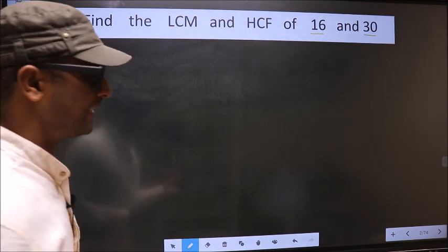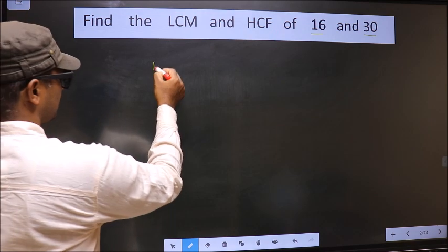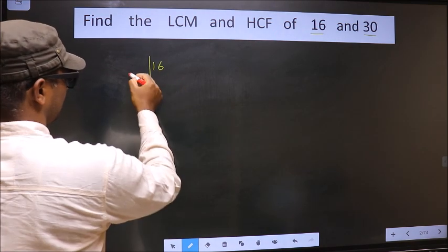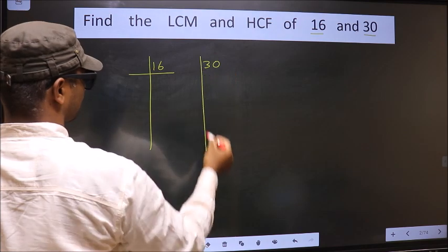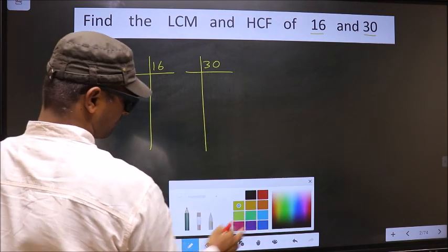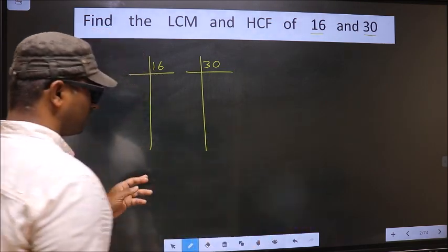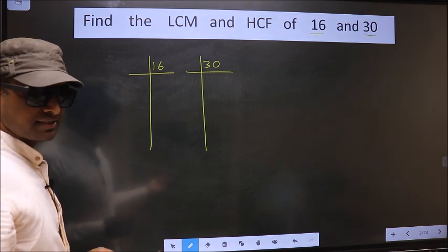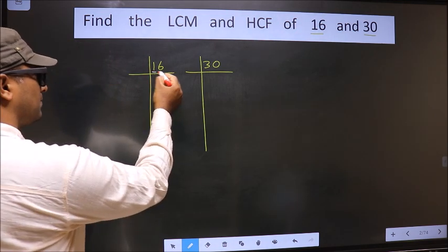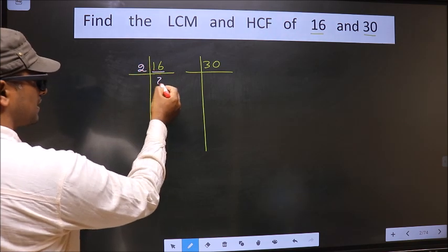That is, 16, 30. Okay. Next. First number is 16. 16 is 2, 8, 16.